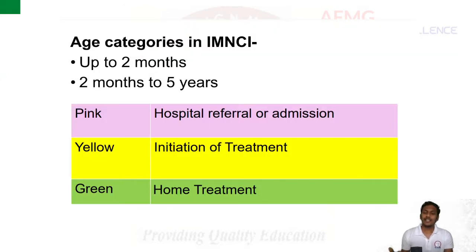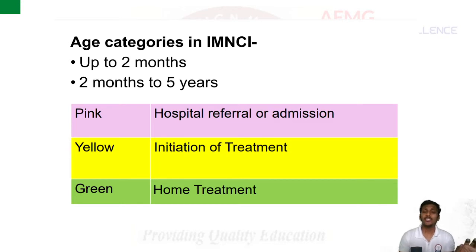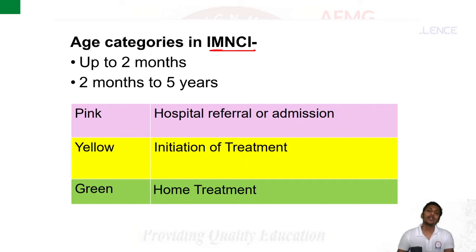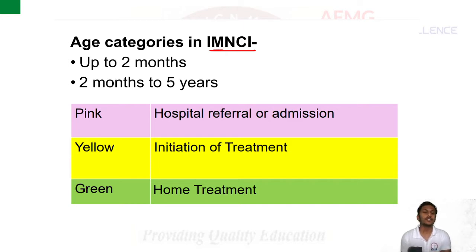Regarding management of pneumonia: usually pneumonia in children is managed according to the IMNCI guidelines — that is Integrated Management of Neonatal and Childhood Illnesses. They have given guidelines for other diseases like measles, diarrhea, and dehydration as well. According to this, there are two age groups: 0–2 months, and 2 months till 5 years.